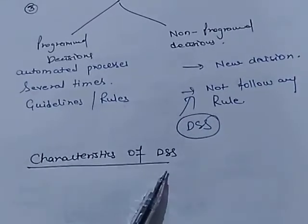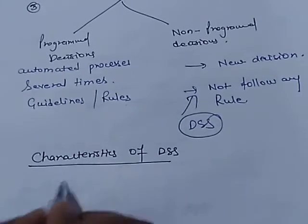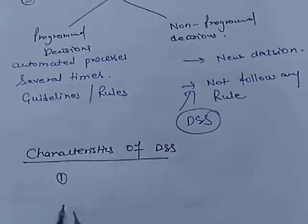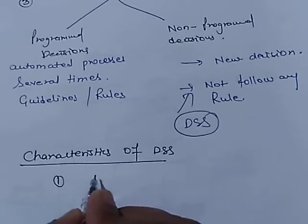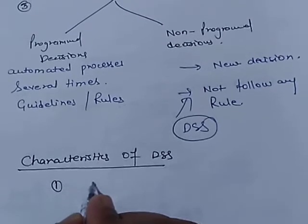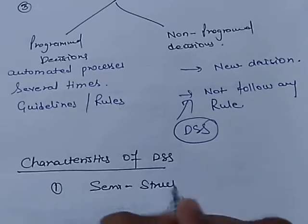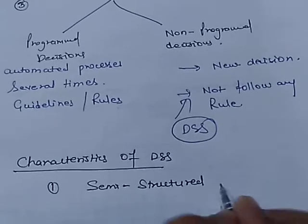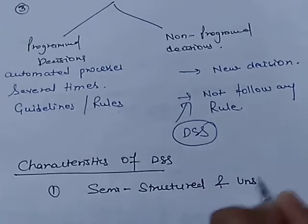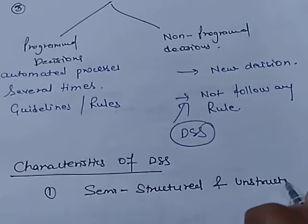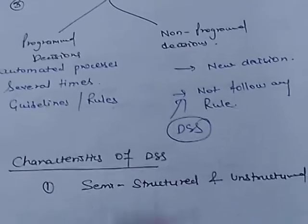We will discuss the characteristics of decision support systems. Point number one: it provides support for decision makers in semi-structured and unstructured problems.